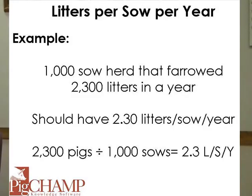One of the traits we use to measure output from the farm is litters per sow per year. For instance, if you had a 1,000 sow farm and you've had 2,300 litters in a one-year period of time, common sense would say you had 2.30 litters per sow per year. This is very consistent and clean if you're looking at fairly long intervals such as a year of time. However, if you start looking at shorter intervals, particularly something like weeks.